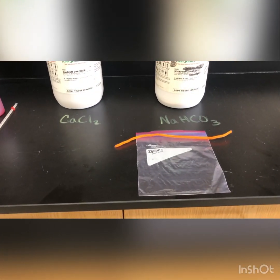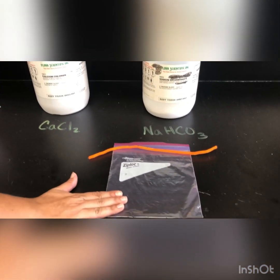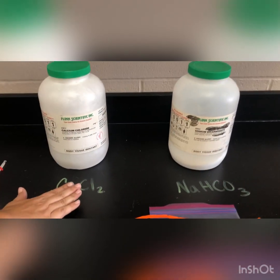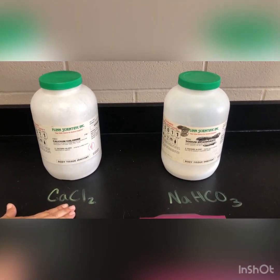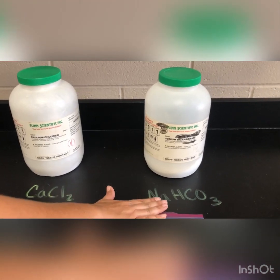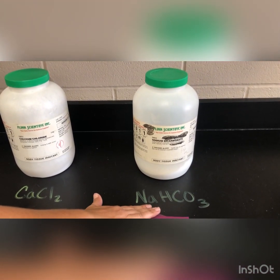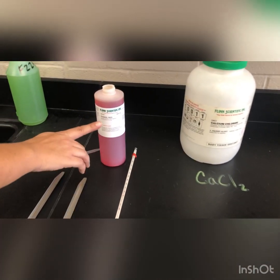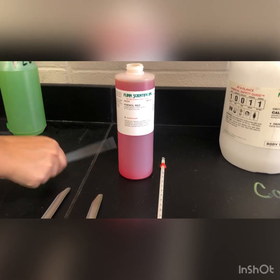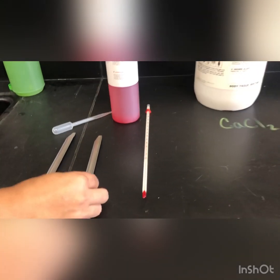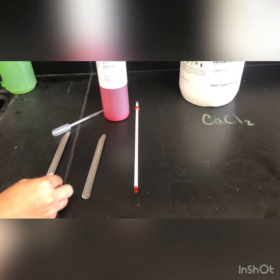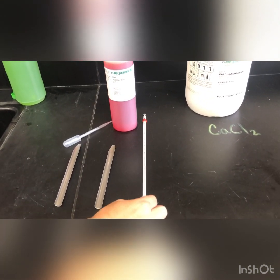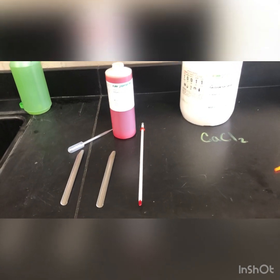The materials needed for this lab are a Ziploc bag, a pipe cleaner, two different chemicals — one called calcium chloride (CaCl2) and another called sodium bicarbonate (NaHCO3). You'll also be using phenol red indicator, a pipette, two spatulas (one for each chemical to avoid cross-contamination), and a thermometer to indicate if there's any temperature change.